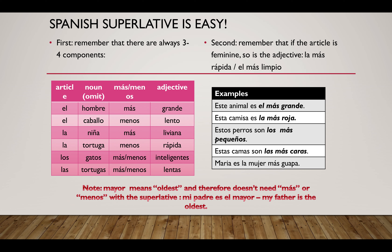Here are some charts for those graph people out there. Remember, there are always three to four components: your article, the noun (which can be omitted), más or menos, and your adjective. Some examples: el hombre más grande, el caballo menos lento, la niña más liviana, la tortuga menos rápida, los gatos más inteligentes. Notice the change between el, la, los, and las. The adjective has to change as well — el caballo lento, la niña liviana — you change the O to an A. Los gatos más inteligentes, las tortugas menos lentas. The adjective changes every time.